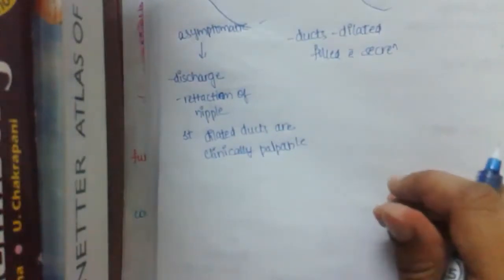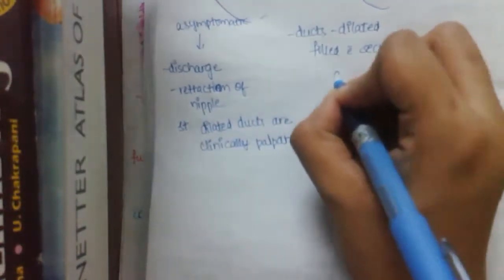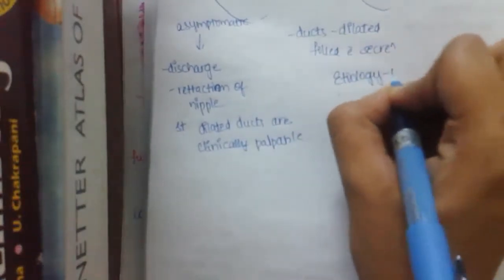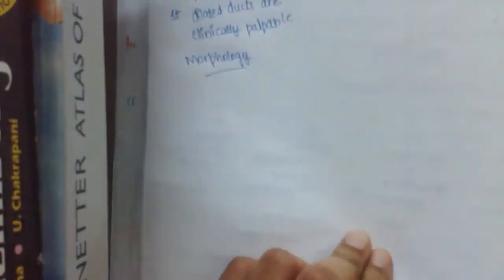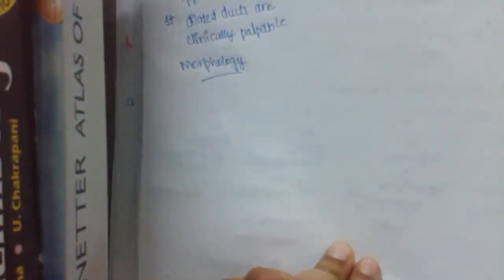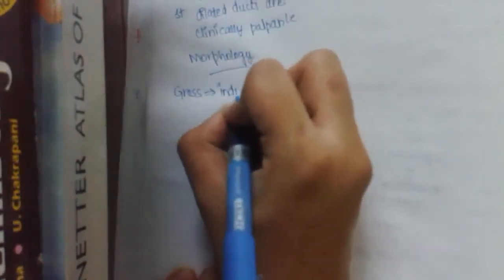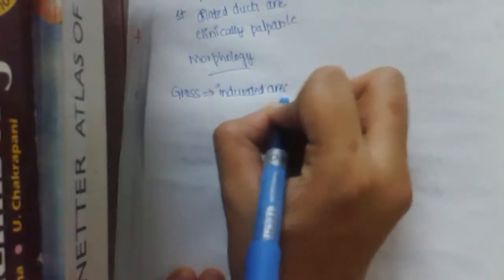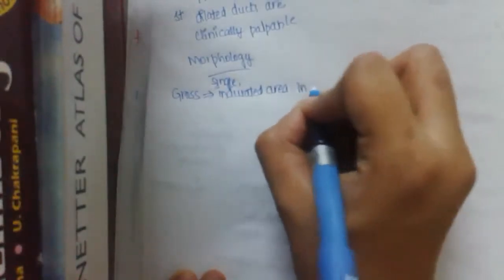The lesion may be sometimes mistaken as the carcinoma of breast because of these palpable ducts. If you come to the etiology, the etiology is unknown. And about the morphological features, grossly, it appears as an indurated area in the breast.